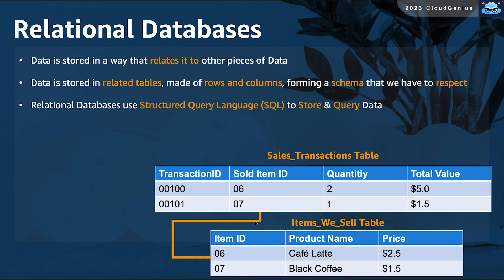Before mentioning the managed database services, let's shed more light on relational databases. From the previous video, we mentioned that for relational databases, we store data in a way that is related to other pieces of data within that database. We store data in the form of related tables, and every table is made of a set of rows and columns that follow a fixed rigid schema. The main method used to store and query data is a language known as SQL, the Structured Query Language.